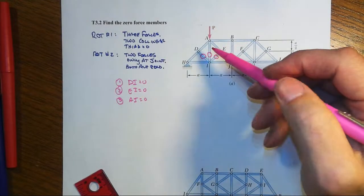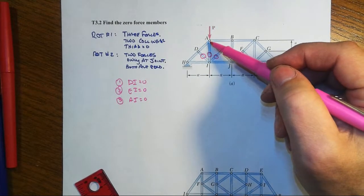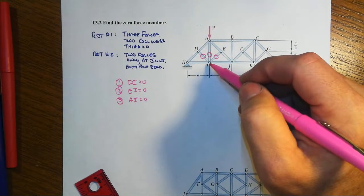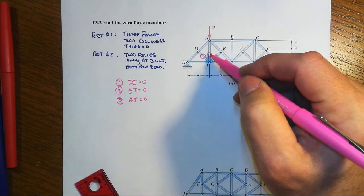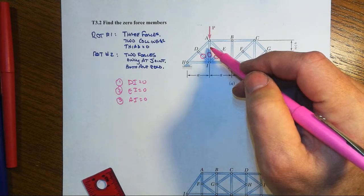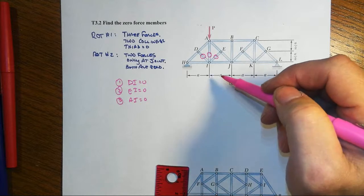Some of you will still rebel against that because you'll say, but AI is connected to a joint where there's an applied load. So what? Joint I tells us that AI must be zero. It can't be one value at one end of the member and another value at the other. If that was the case,